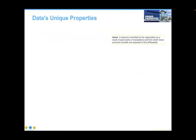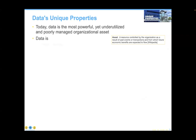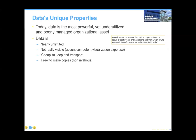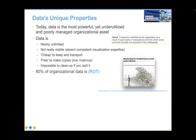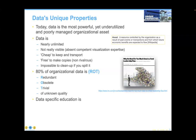Data is the most powerful, underutilized, and poorly managed organizational asset. It is nearly unlimited, free to make copies — which makes it non-rivalrous — and of course impossible to clean up if you spill it. You probably weren't aware that 80 percent of organizational data falls into the category of redundant, obsolete, or trivial — ROT data — and if it's of unknown quality it makes it very difficult to use anything in that context.